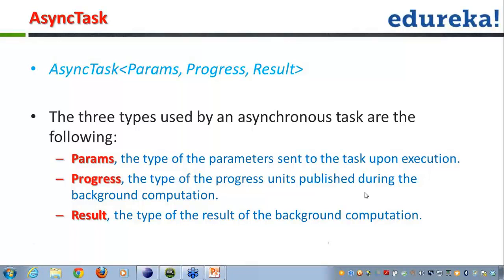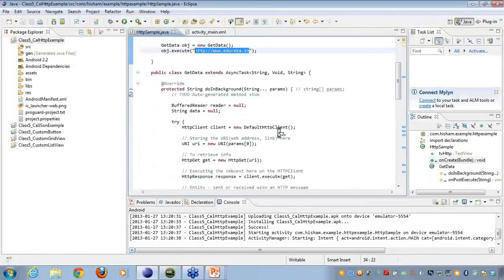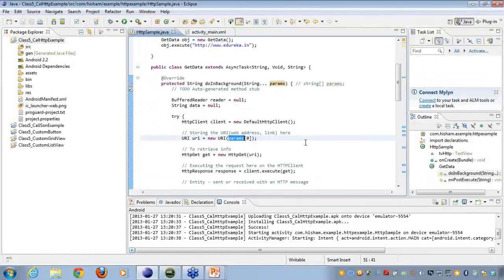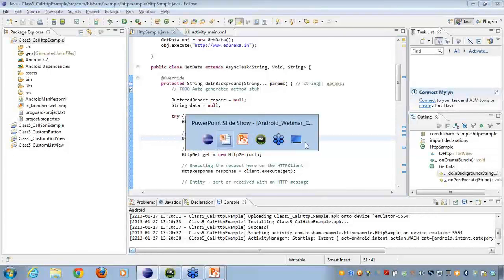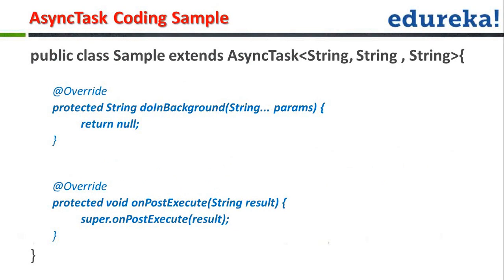Aron has asked what params are. Params are the objects that we want our AsyncTask to work upon. For example, if we were calling the edureka.in URL, that URL is the param passed to the AsyncTask. It could also be a string array, not just a single string. If passing a string array, we can reference the various string array objects using indices — for example, indices 0, 1, 2 if passing a pair of strings.